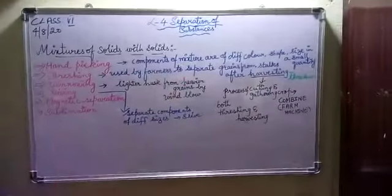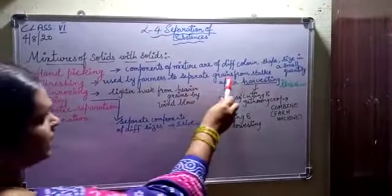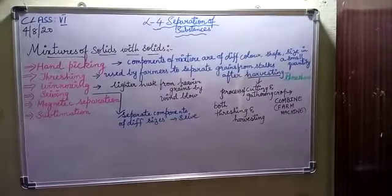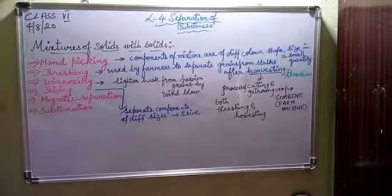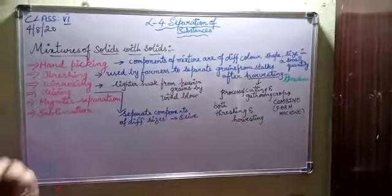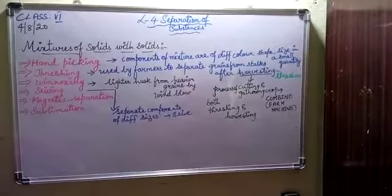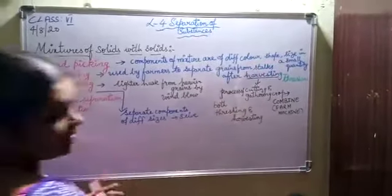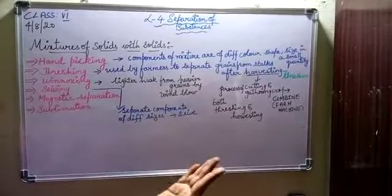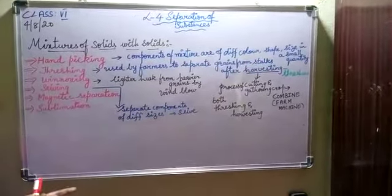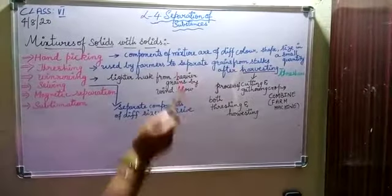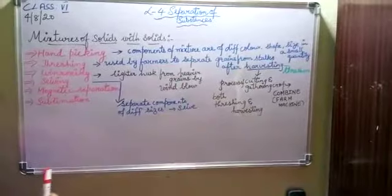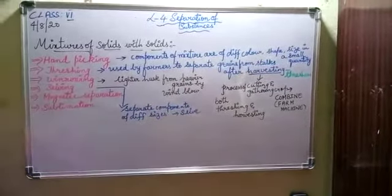Threshing is a method especially used by farmers to separate the grains from the stock after harvesting. After getting the crop, they dry the crop. The dried crop will be having the grains. They beat the stock — the long stalks — and remove the grains from the stock after harvesting.